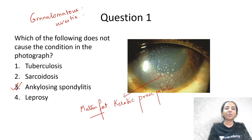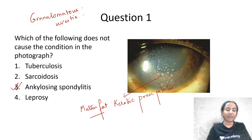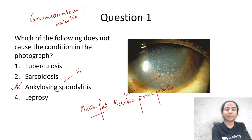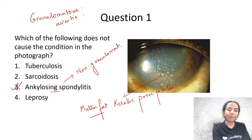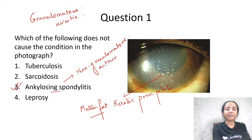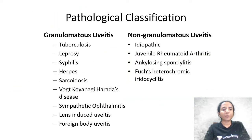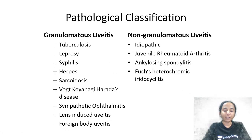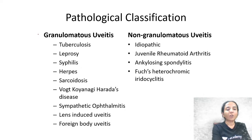This question is asking which of the following is NOT a cause of granulomatous uveitis. That's why we choose ankylosing spondylitis — it causes non-granulomatous, HLA-B27-associated uveitis. The important causes of granulomatous uveitis are TB, leprosy, syphilis, herpes, sarcoid, VKH disease, sympathetic ophthalmitis, lens-induced uveitis, and foreign body uveitis.